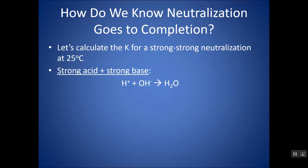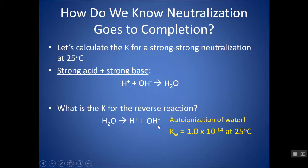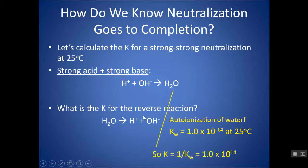How do you know neutralization goes to completion? Look at the reverse reaction: H₂O breaking up into H⁺ and OH⁻ is the autoionization of water, with K = Kw = 1×10⁻¹⁴. If we flip that reaction, we take the reciprocal, giving K = 1/Kw = 1×10¹⁴ — a really large number. So equilibrium lies so far to the right that we assume the reaction goes to completion.